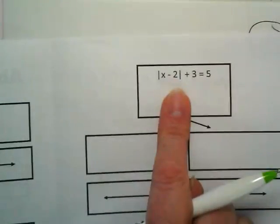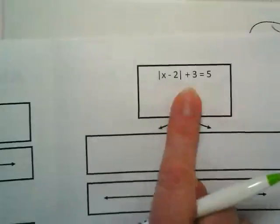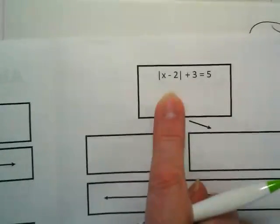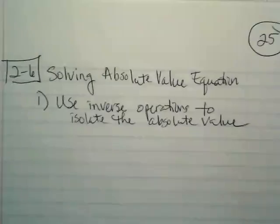This side, we would have to do the step one we just wrote down. We would have to use the inverse operation by subtracting that three to get this by itself. So sometimes you can skip step one.